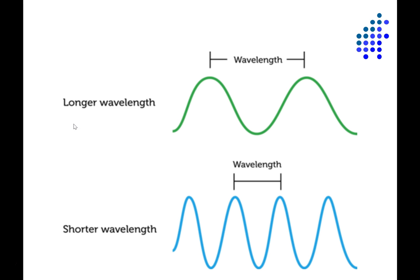But first, what is wavelength? All regular repeating waveforms have certain ways that you can characterize them. One is the height or amplitude of the wave from peak to trough. Another is the wavelength, the distance from one peak to the next or from one trough to the next.